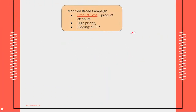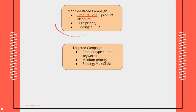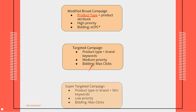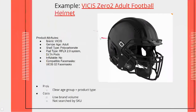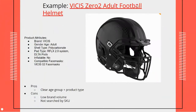Here's the campaign tier breakdown: the modified broad campaign uses product type plus product attribute with high-priority enhanced CPC; the targeted campaign uses product type plus brand; and the super-targeted campaign uses product type or brand plus a SKU keyword — either or — at lowest priority with maximize clicks.